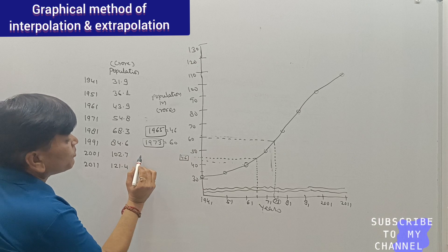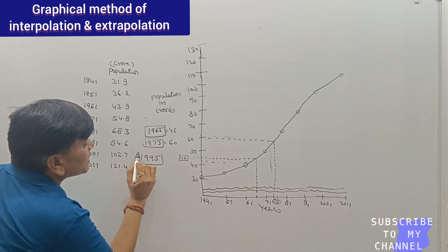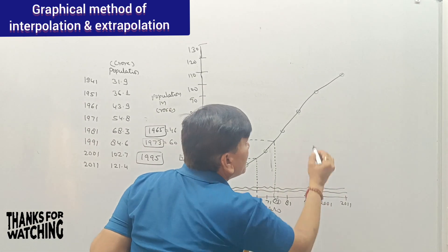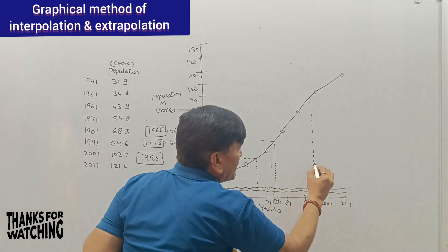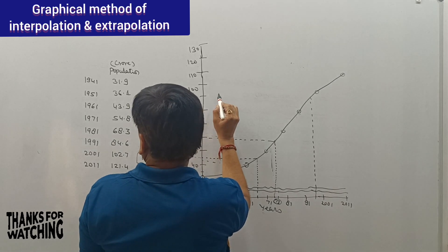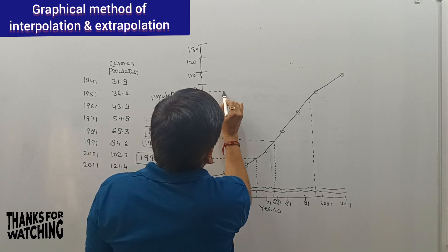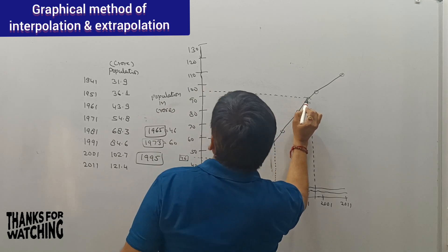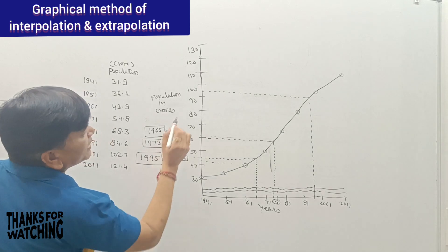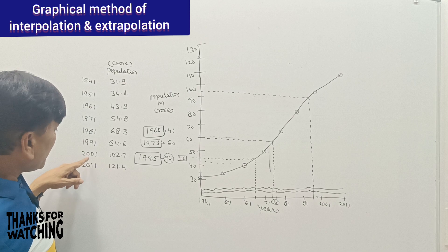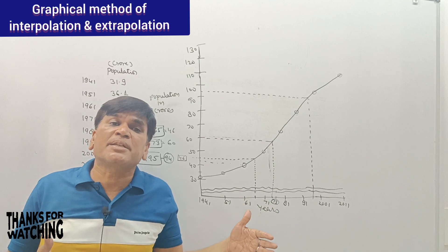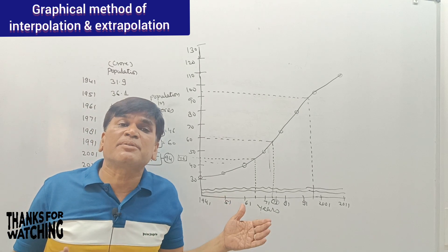If we want to find the population in 1995, we draw a perpendicular at 1995. Reading from the graph, the population in 1995 may be approximately 94 to 95 crores. These are all examples of interpolation because we are calculating within the available data range.